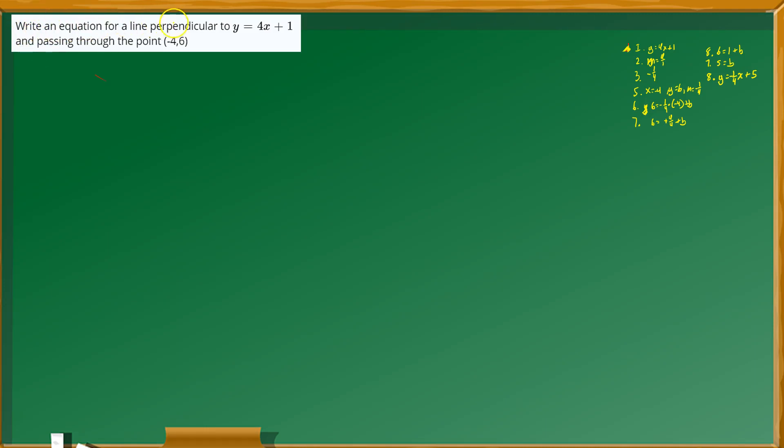All right, and this one answers this question: write an equation for a line perpendicular to y equals 4x plus 1 and passing through the point negative 4, 6.